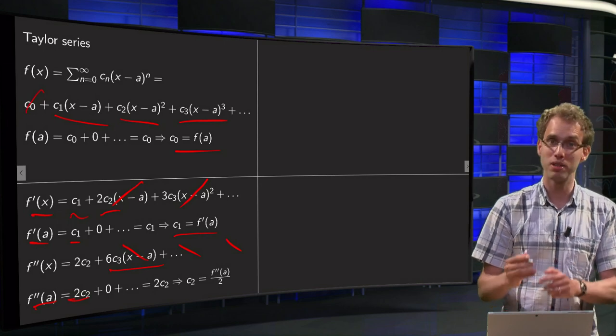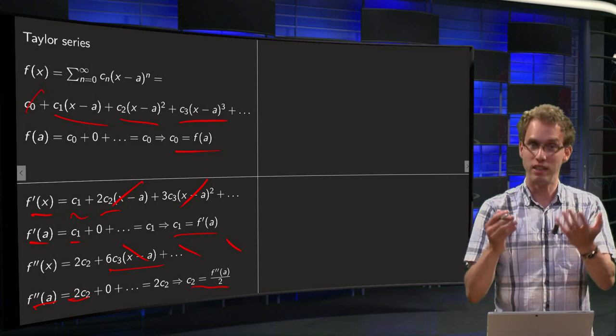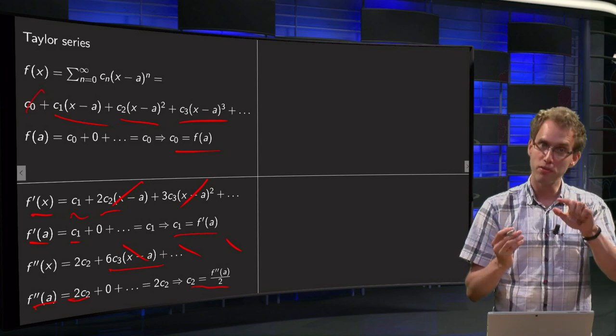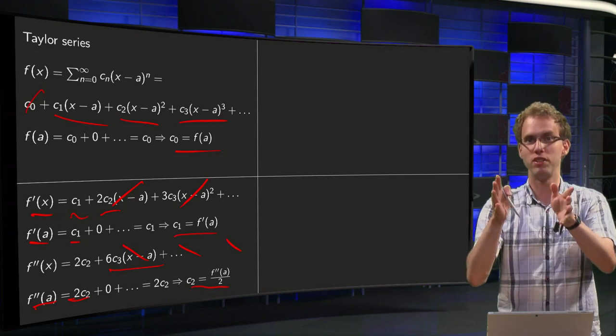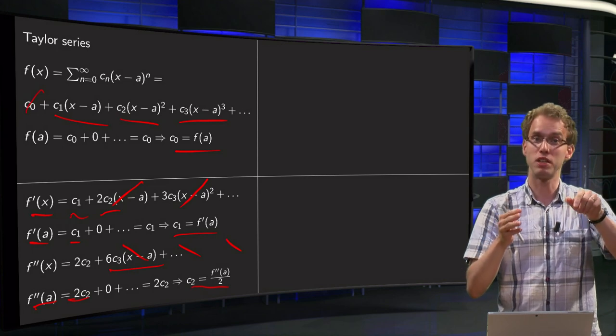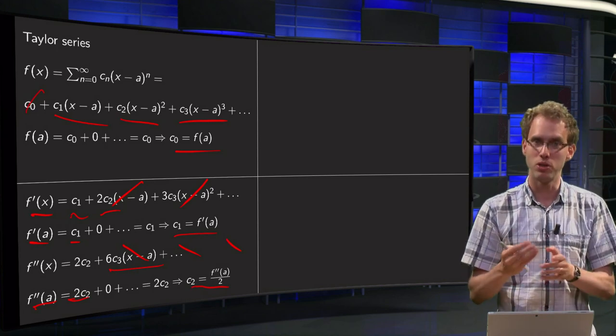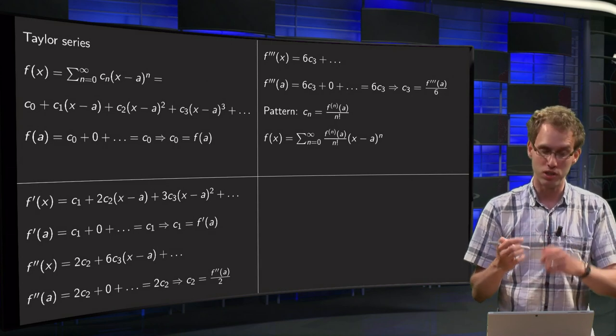Hey, now something different happens, slightly different. We see 2 times c2 indeed equals f double prime of a, but now we have to divide by 2. That comes of course from the differentiation. You started with c2 times (x-a) squared, then you get 2 times c2 times (x-a), and then 2 times c2. So there a factor of 2 is coming from, and we will see the pattern if we continue this.